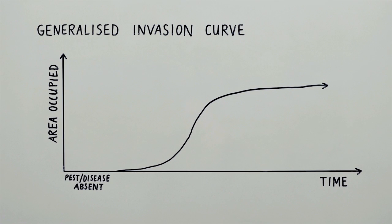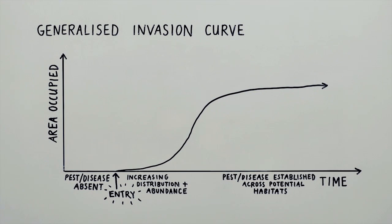If a plant or animal pest or disease was introduced into Western Australia and left unchecked, it would increase in its spread or distribution and in the number of individual organisms, its abundance, until it became established.